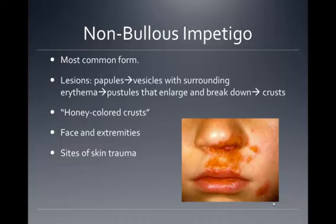Non-bullous impetigo is the most common form. Though bullae are not present, the vesicles, which are fluid-filled lesions less than half a centimeter in diameter, may appear transiently early in the disease. Causative agents are Staph aureus, Streptococcus pyogenes, or a combination of the two.